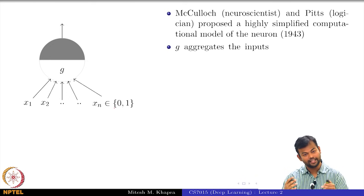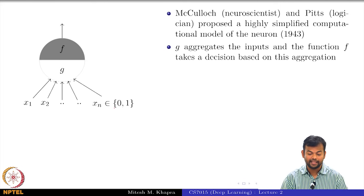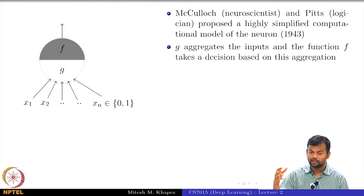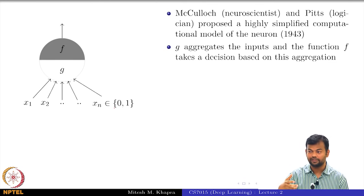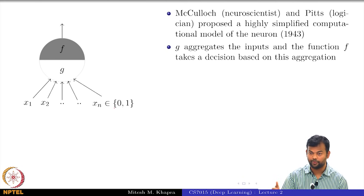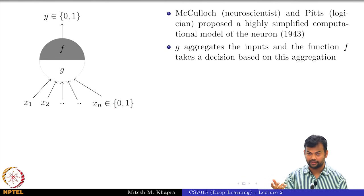The first part collects all the inputs — remember you had dendrites which were taking all the information from everywhere. This part just collects all the information, and then the second part sees what this aggregation is. The second function will decide what this aggregation is and based on that it will decide whether to fire or not. The output is again Boolean: if it is 0 the neuron does not fire, if it is 1 the neuron fires.